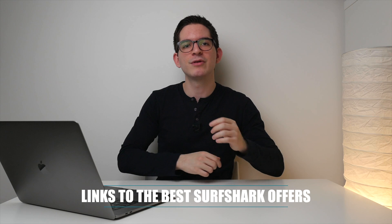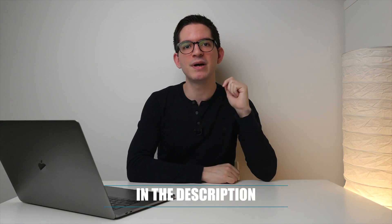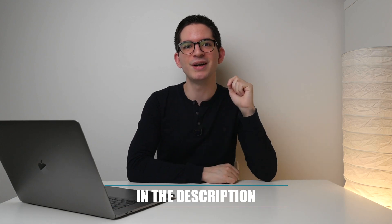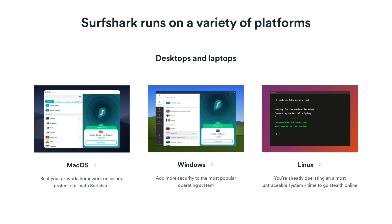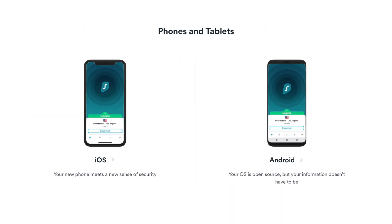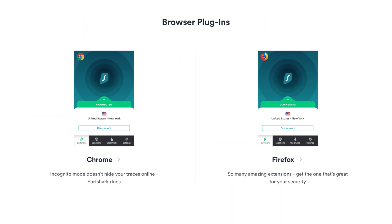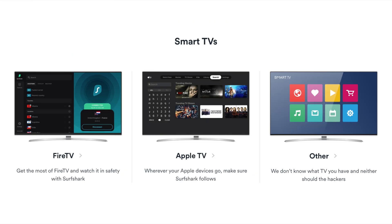Today, we're going to be taking a look at Surfshark. Surfshark is a VPN that is best known for its value proposition, providing many features for a very compelling price. If you're interested in Surfshark, I will leave links to the best possible deals in the description. Surfshark has over 3,200 servers in 65 countries all over the world and is supported on all major desktop as well as mobile operating systems, even supporting browser extensions and smart TVs.